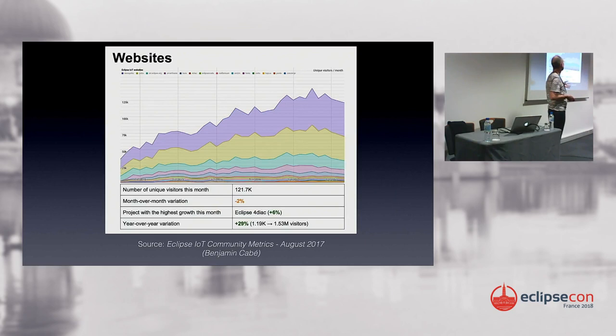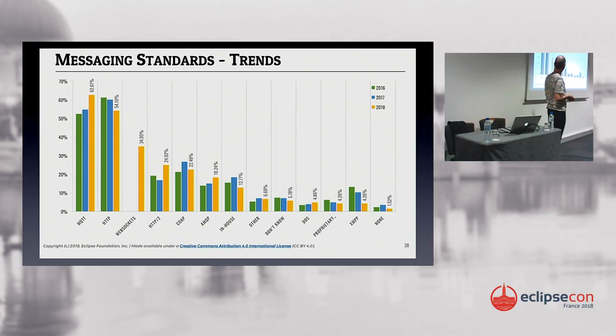This chart from the Eclipse Foundation shows the number of visitors to the Eclipse IoT websites. The top two are MQTT-related, showing the popularity of MQTT within the IoT world. This result from a recent Eclipse developer survey shows MQTT is the most popular protocol — it's a close run thing between HTTP and MQTT for connection between devices and cloud, and MQTT is increasing its advantage over HTTP.